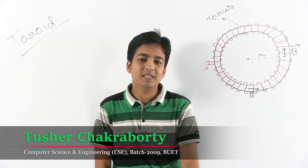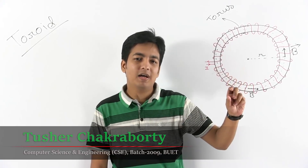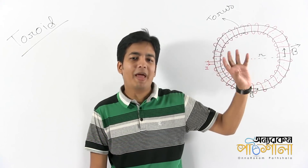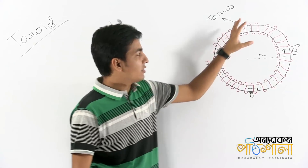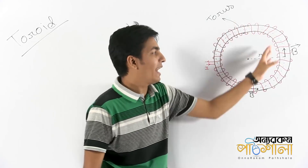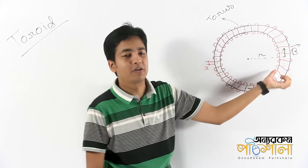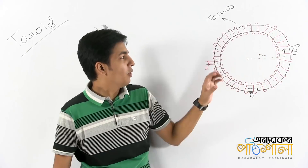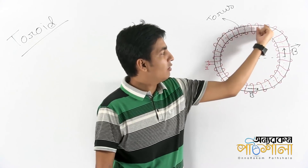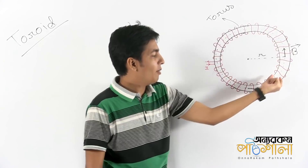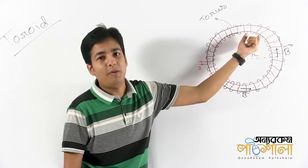This is the first toroid. The first toroid has a constant, uniform magnetic field. This is not an ideal toroid. This is structured. This is called a torus.